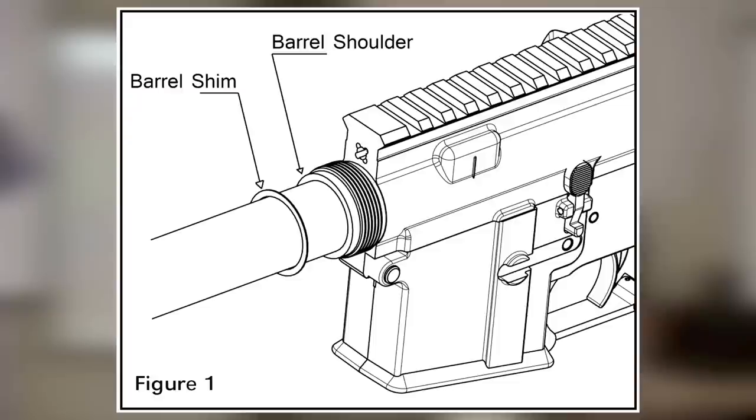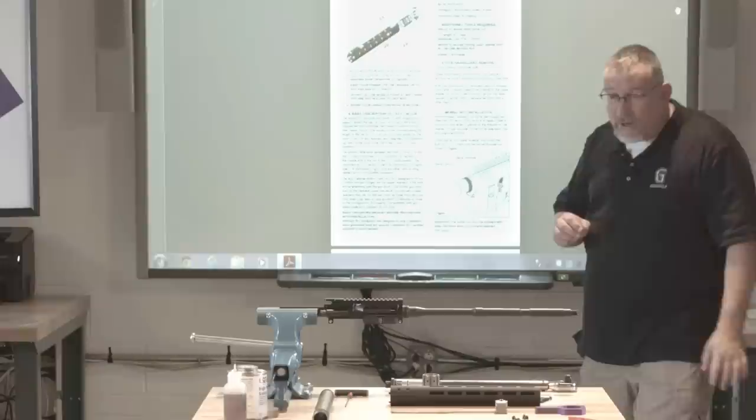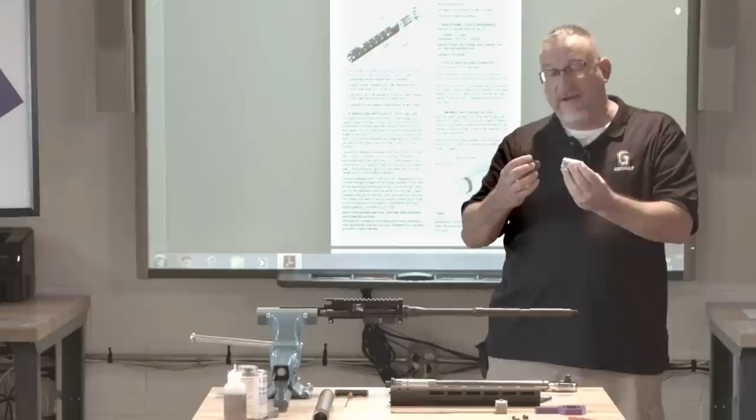We come here to the barrel nut installation. This is the first thing that you're going to look at. Right here you see the shoulder of your upper receiver along with the shoulder of your barrel extension that's inside it. And here you see a barrel shim going onto the barrel. The barrel nut for ALG is a machined barrel nut.